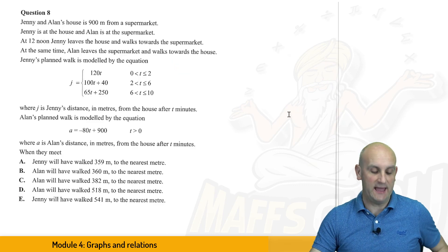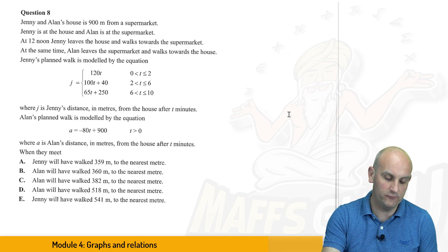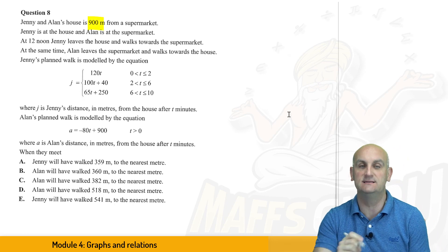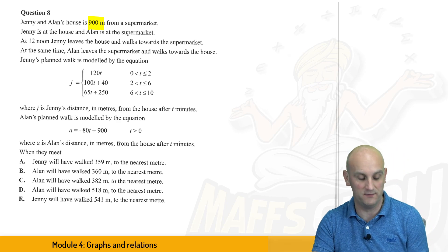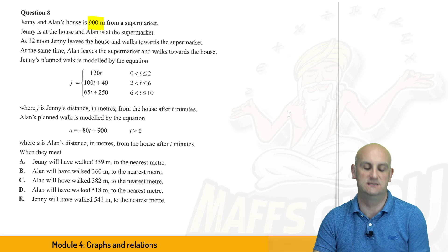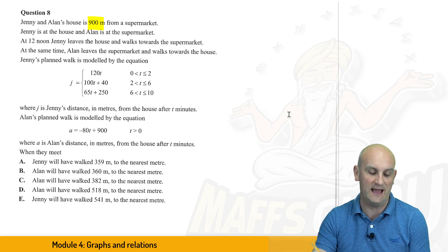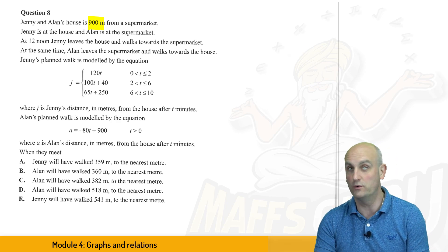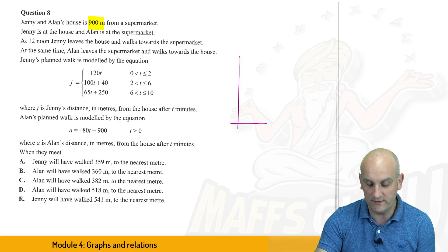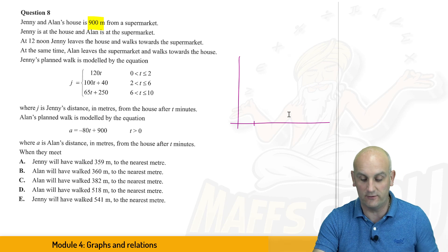And here we have question number 8. Jenny and Alan's house is 900 metres from a supermarket, and Jenny is at the house, and Alan's at the supermarket. And actually, that was the important part of this question. At 12 noon, Jenny leaves the house and walks towards the supermarket, and at the same time, Alan leaves the supermarket and walks towards the house. Now, Jenny's planned route is modelled by that. What I did when I solved this was, first things first, I actually drew a diagram.